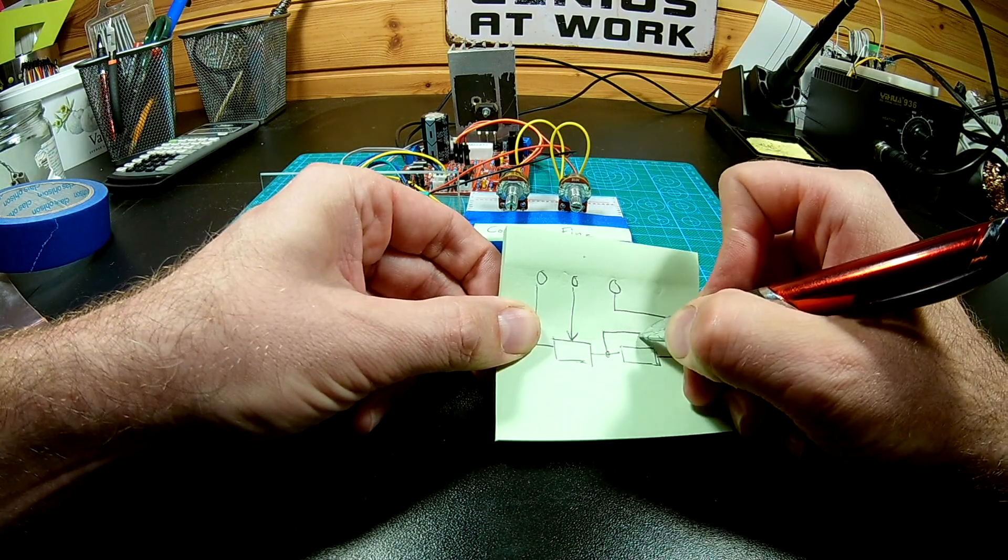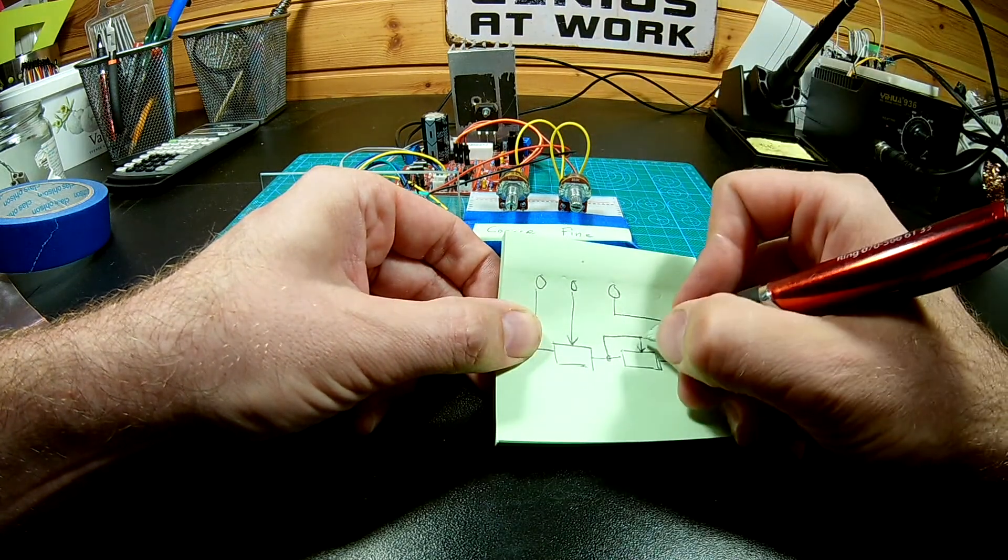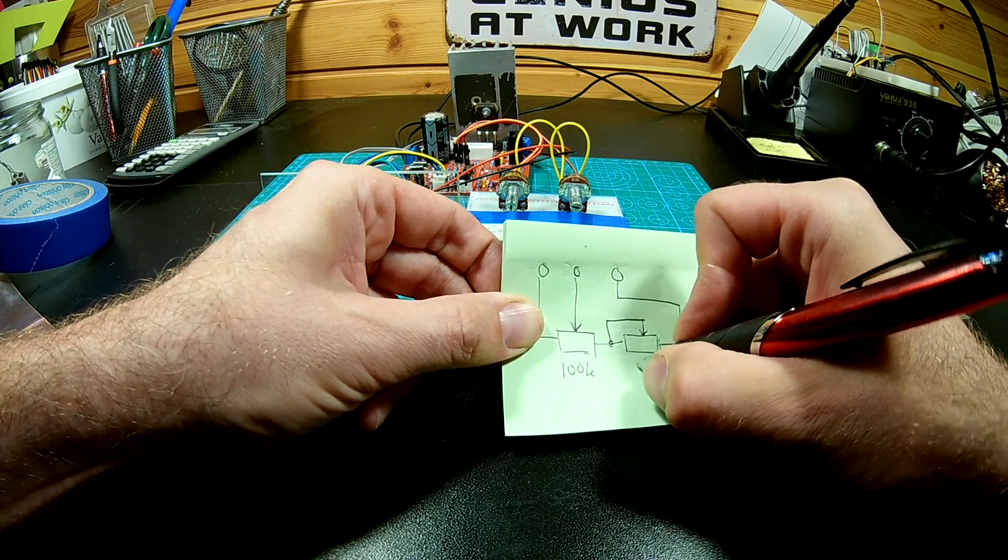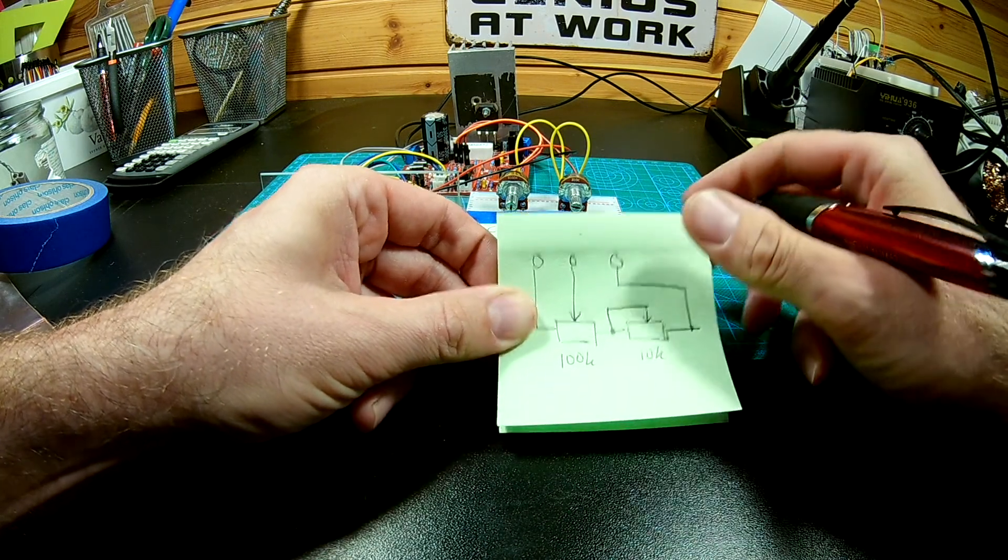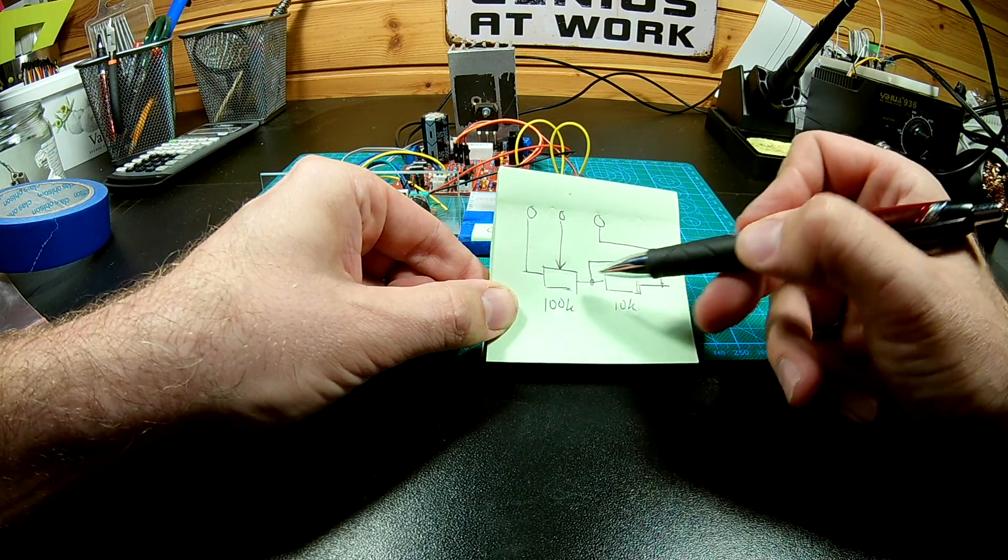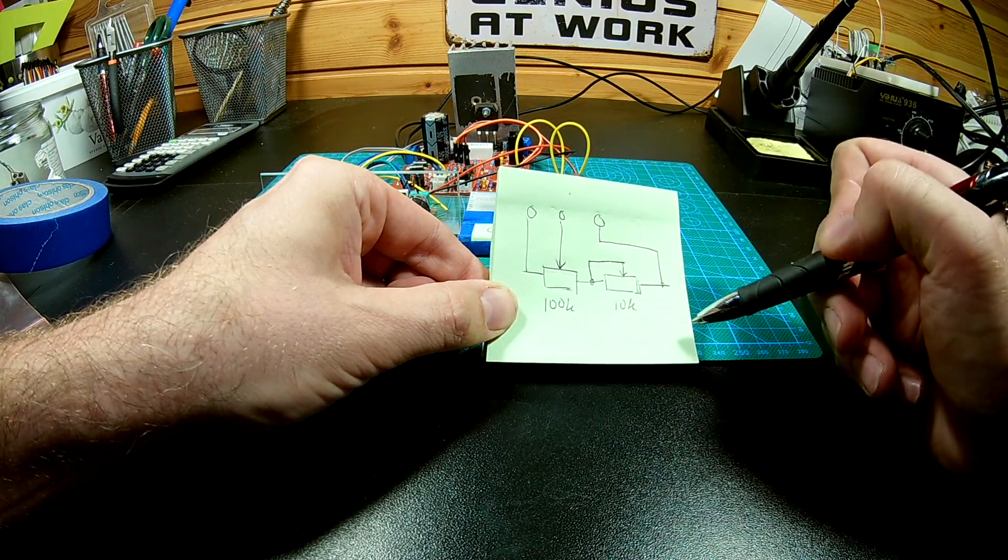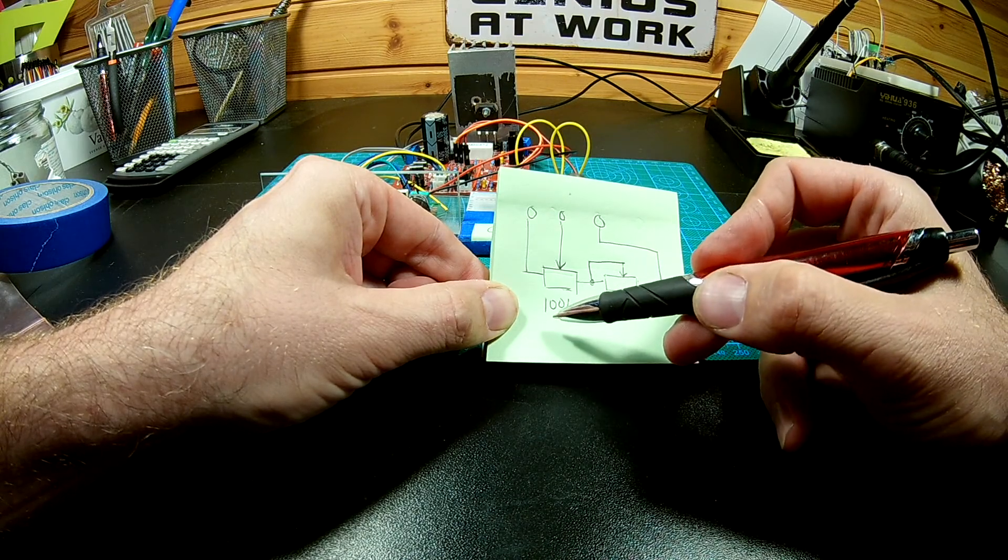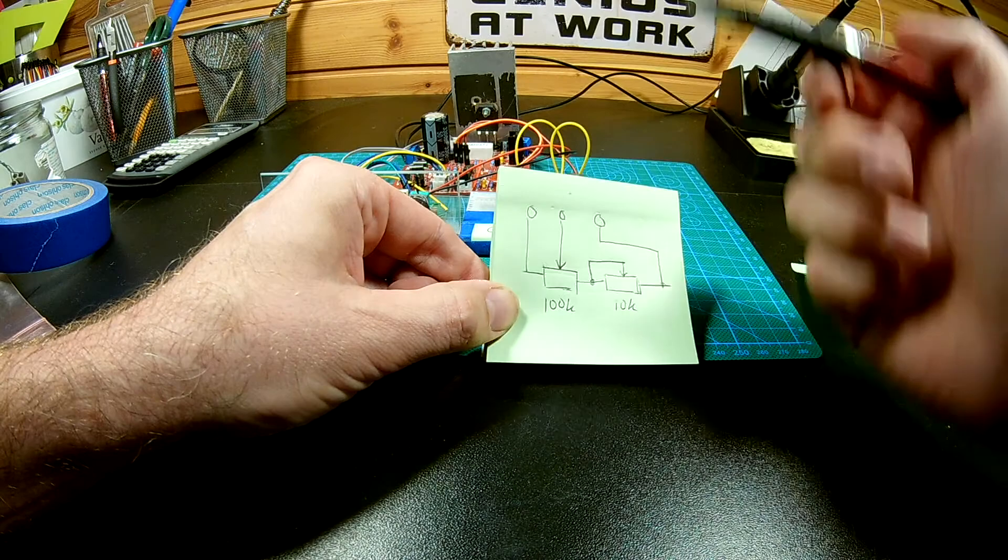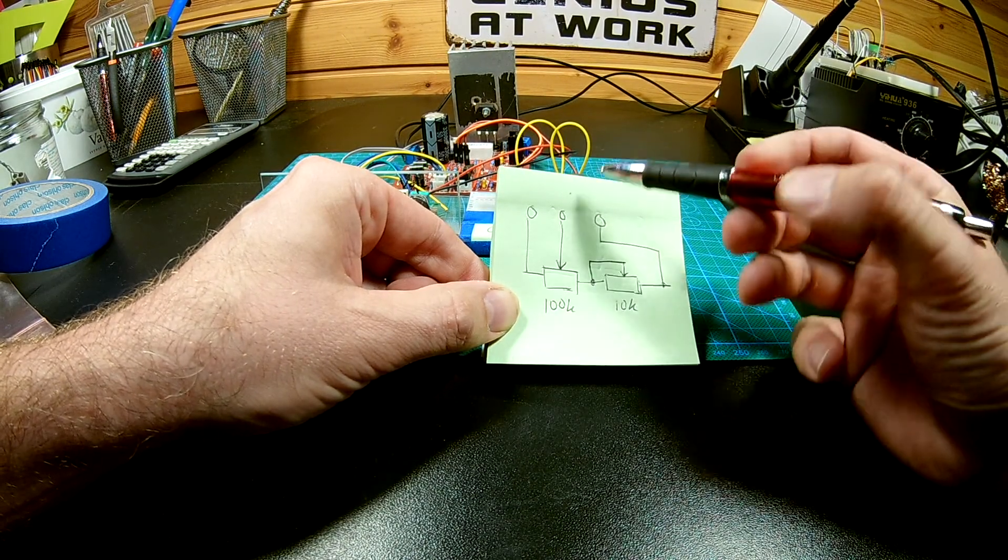So I get the same, if I connect the other side I get backwards, the knobs are working backwards. So this is nice. So this is 100k and this is a 10k potentiometer. The problem is that the total resistance of this one will be variable from 100k to 110k.